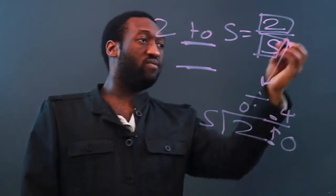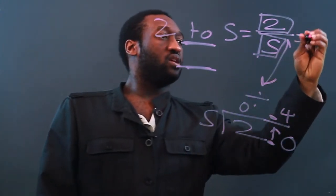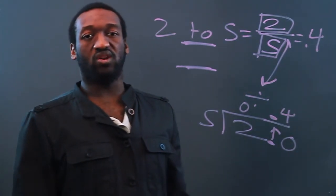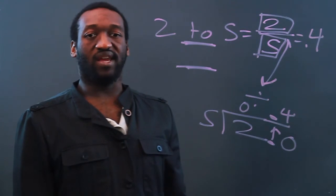So our decimal equivalent for these odds is 0.4. And that's how you turn fractional odds into decimals. Thanks for watching.